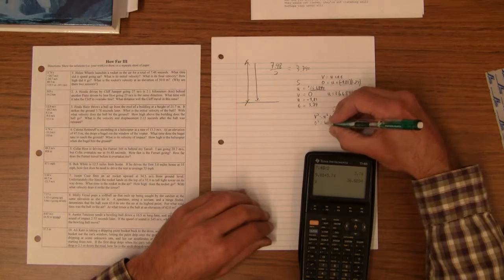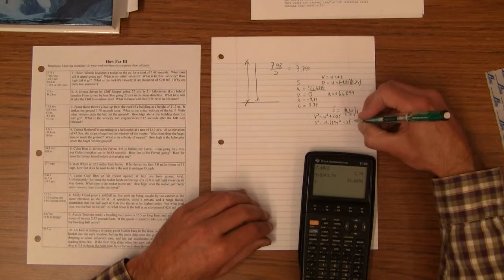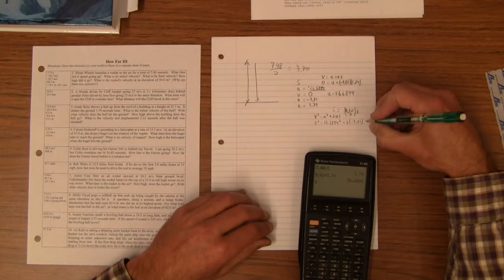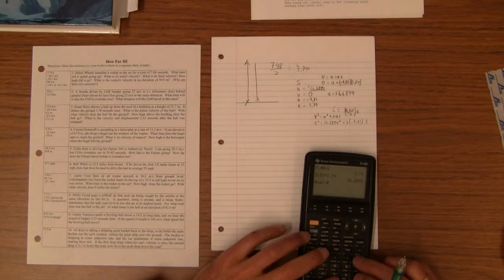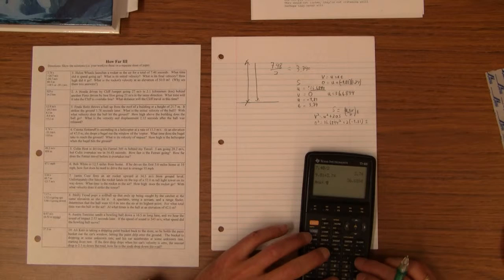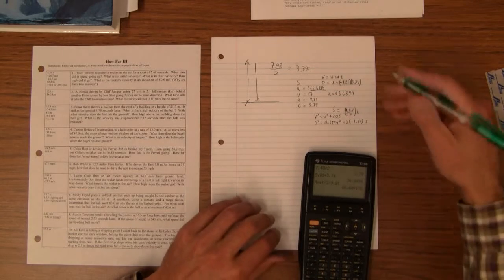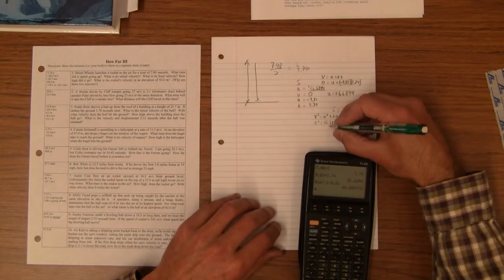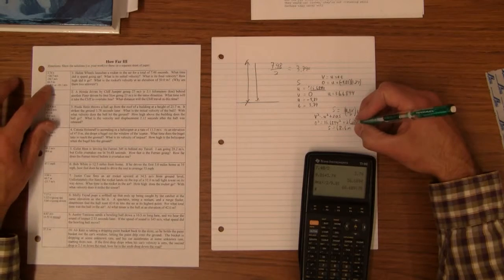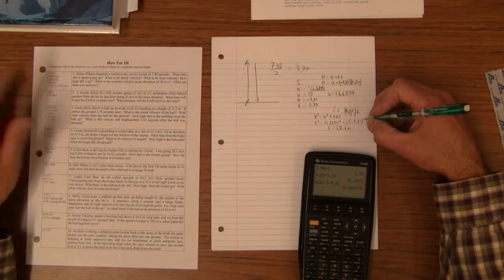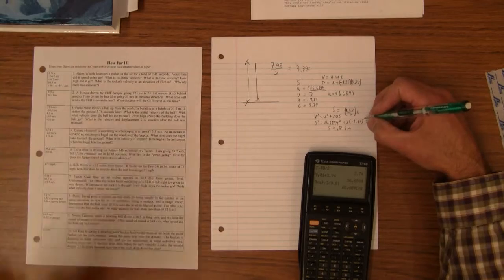0 squared is 36.6894 squared plus 2 times negative 9.81 times S. So that's squared divided by 2 divided by 9.81, and that's 68.6. This one says 68.5. That might be a different value of G, 9.8 maybe instead of 9.81.